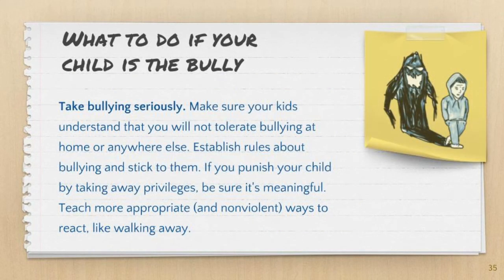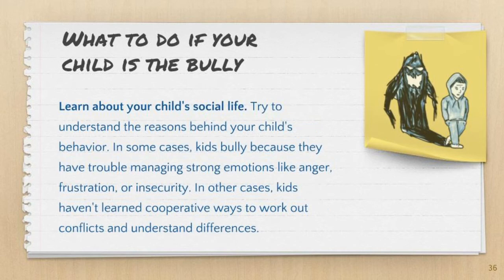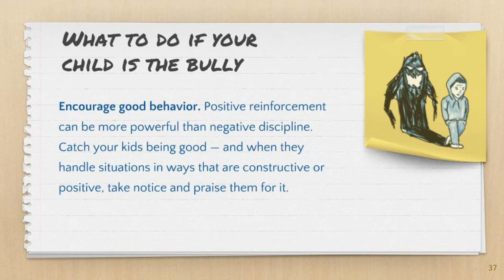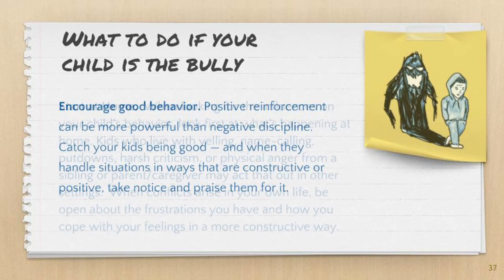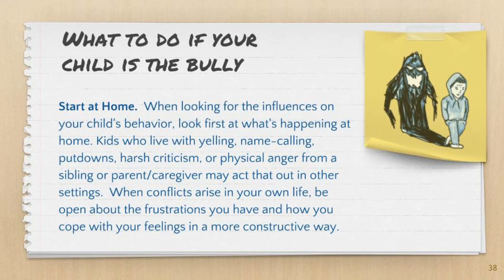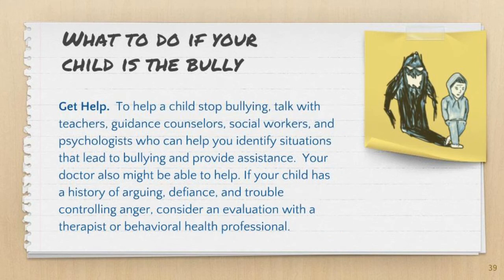So what to do if your child is a bully? First, take bullying seriously. Make sure your child understands you will not tolerate bullying anywhere and provide immediate consequences for their actions. Try to learn about their social life and how they react to stress, as many kids bully because they have trouble managing strong emotions like anger, frustration, or insecurity. In other cases, kids haven't learned cooperative ways to work out conflicts. Encourage good behavior — catch your kids being good. Sometimes positive reinforcement can be more powerful than negative discipline. When they handle situations constructively, take notice and praise them. Start thinking about what's happening in your house and how you cope with frustrations in a constructive way. Most importantly, get help — reach out to teachers, guidance counselors, social workers, and psychologists. If your child has a history of arguing, defiance, and trouble controlling anger, consider an evaluation with a therapist or behavioral health professional.